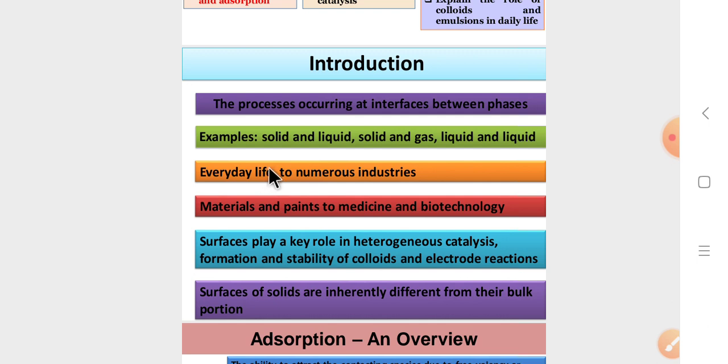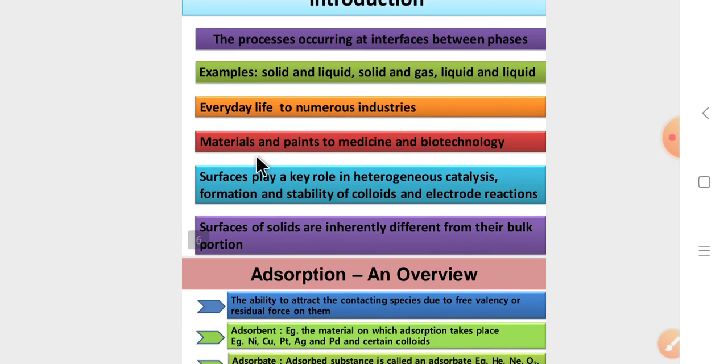In our daily life, there are numerous industries where surface chemistry is used extensively. The first one is materials and paints to medicine and biotechnology. Surface chemistry is very useful.